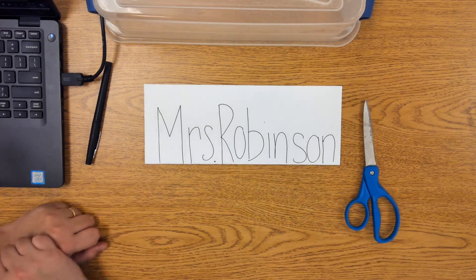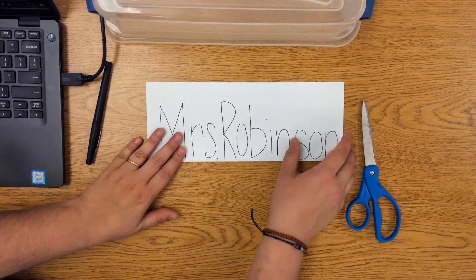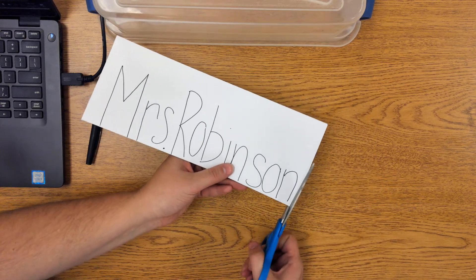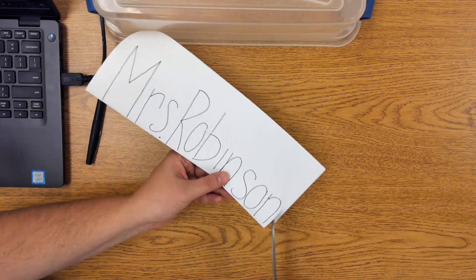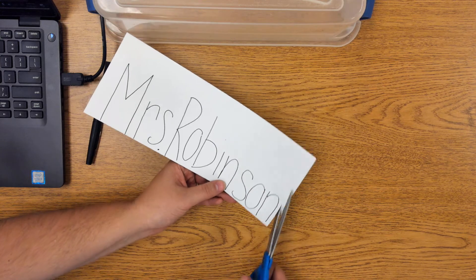Once you have your name on there, you're going to carefully use your scissors. We're going to come here and I'm going to cut out around my name. Now I don't want to cut across the bottom of my name - that stays where it is.